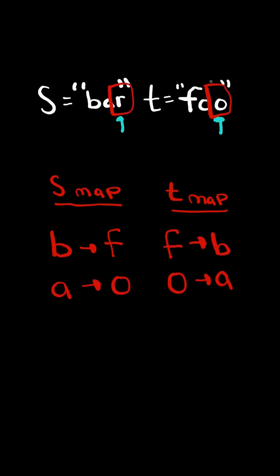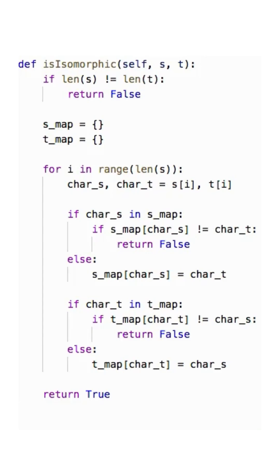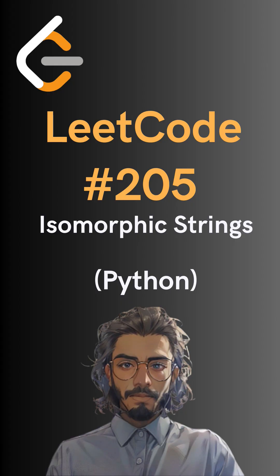If either of the characters exist as a key in either of the mappings, then we return false. And here is the code to do so. Please like and follow for more.